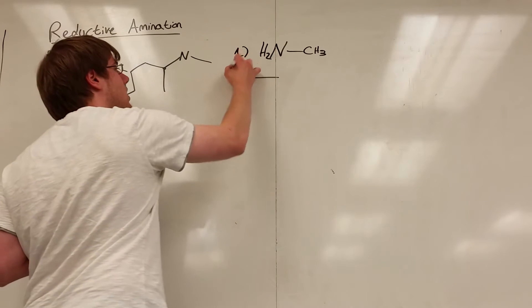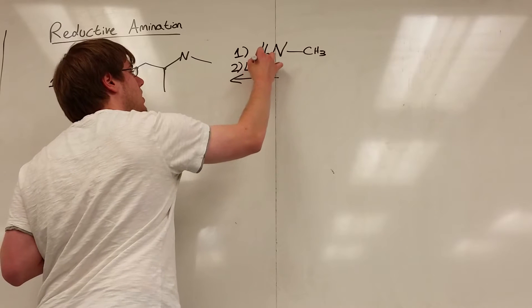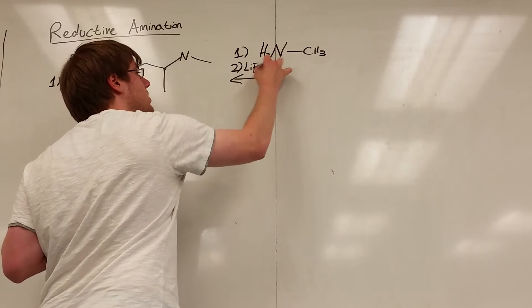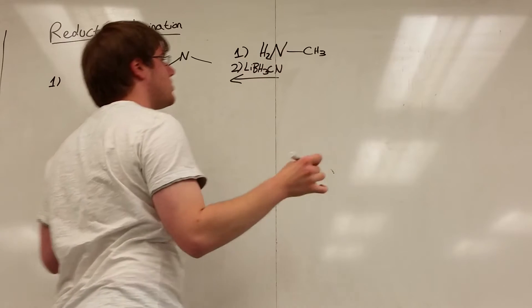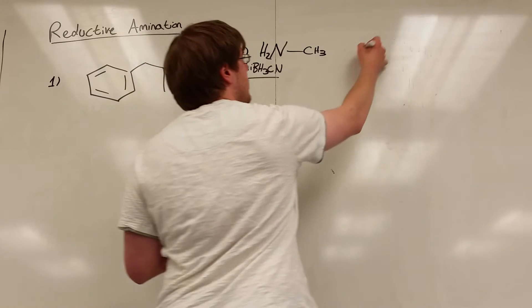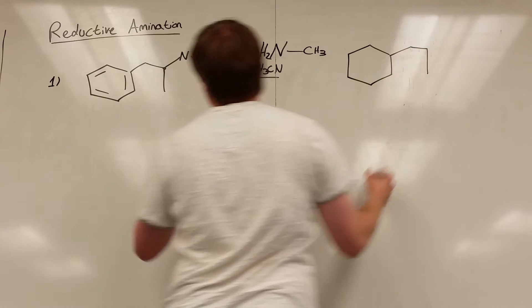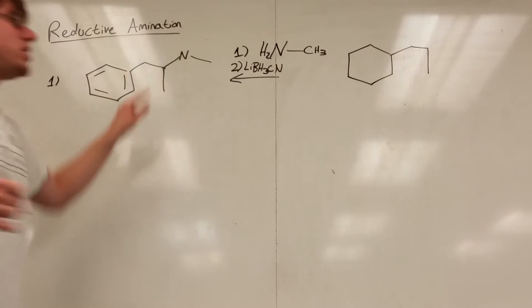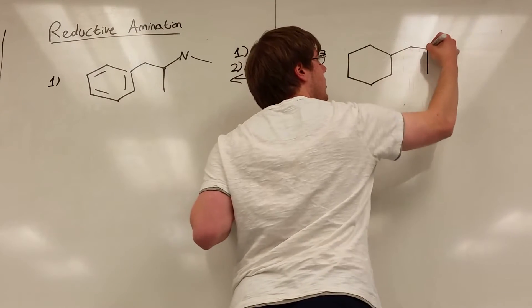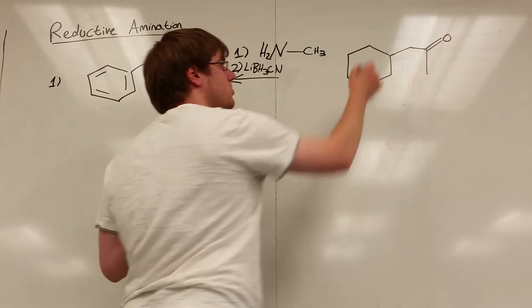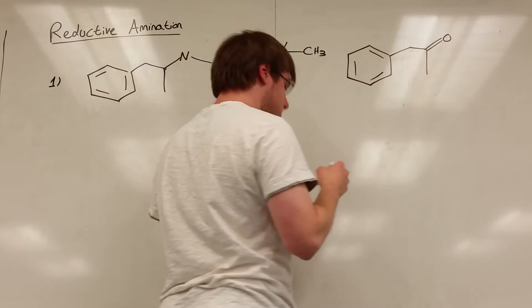And then step two, I need the reducing agent, the LiBH3CN or the NaBH3CN. And that will give me, now the benzene's untouched. But I chopped that nitrogen off and on the carbon it was attached to should now be a double bond O. And now this is just some old Orgo I synthesis, except for the benzene part.